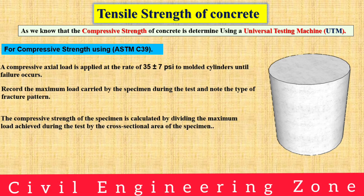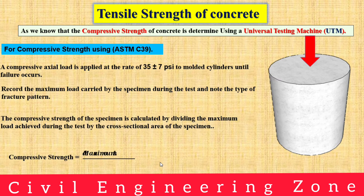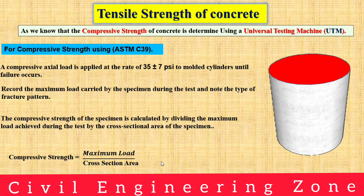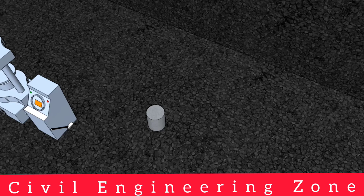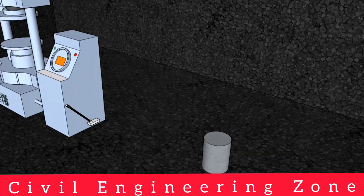The compressive strength of the specimen is calculated by dividing the maximum load achieved during the test by the cross-sectional area of the specimen. So we can easily find out the compressive strength of the cylinder by dividing the maximum load carried by the specimen by the cross-sectional area of the cylinder.